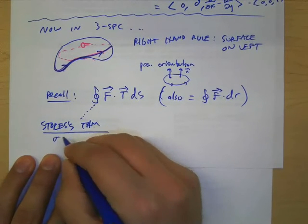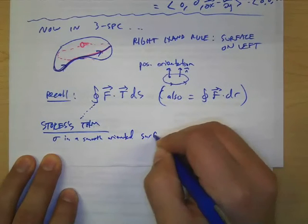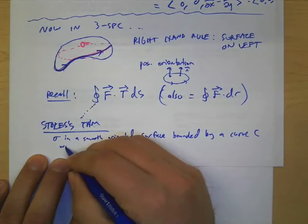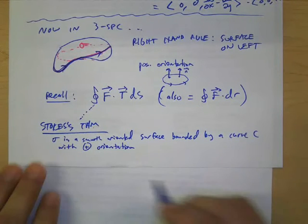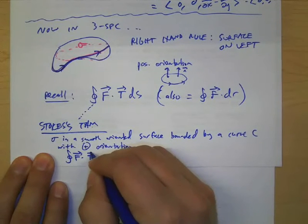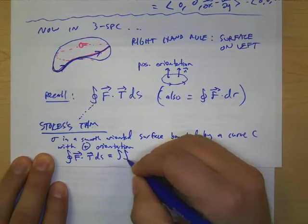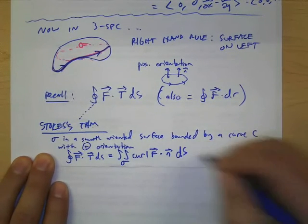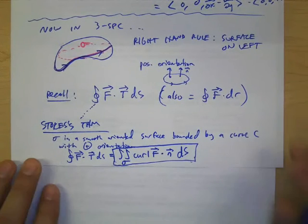And this is actually where we're going to... Here, let me write it this way. Also the same as F dot dr. This is where we get Stokes' theorem. So again, we're going to suppose the usual. We have sigma as a smooth oriented surface. Stokes' theorem says that the line integral of F dot T ds.